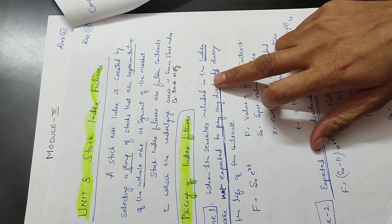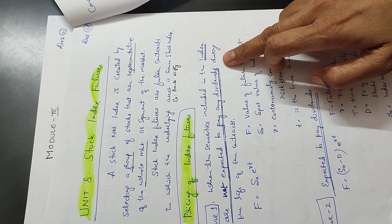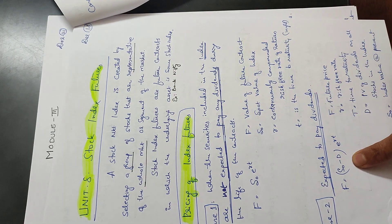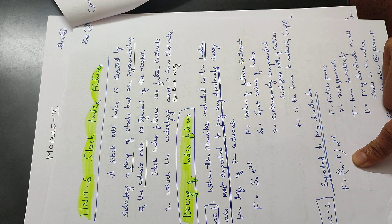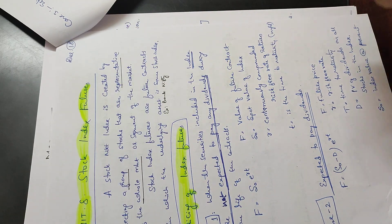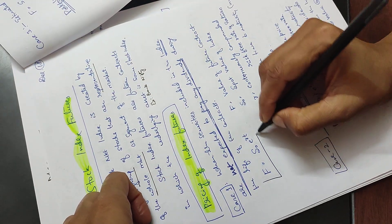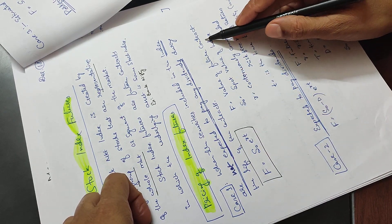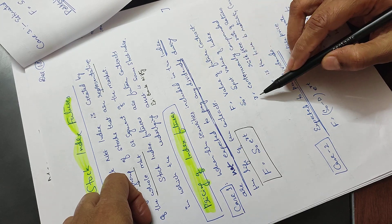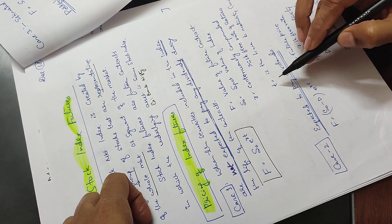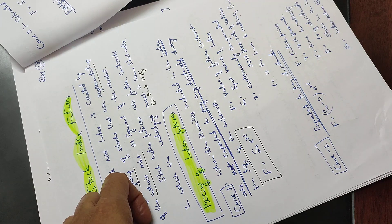Case 1 is when the securities included in the index are not expected to pay any dividends. The formula without dividend is: F is equal to S0 e^(RT). F is the value of the futures contract, S0 is the spot value of the index, R is the continuously compounded risk-free rate of return, and T is the time to maturity.